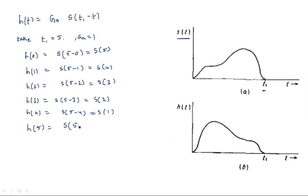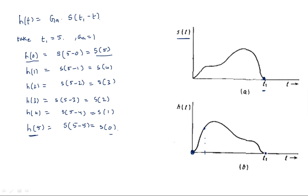Continuing the example: at T=5, H(5) = S(5-5) = S(0). If we go beyond T=5, we would need S of a negative value, but there is no signal for negative time, so no signal exists there. So H(0) equals the amplitude S(5), H(1) equals S(4), H(2) equals S(3), and H(5) equals S(0). The amplitudes are reversed in time — the amplitude at each point of H(T) corresponds to the time-reversed amplitude of S(T).